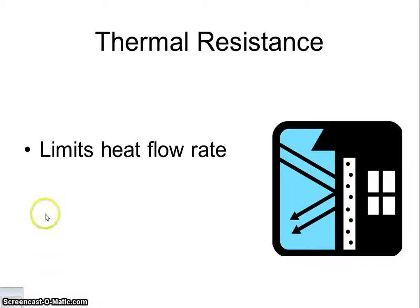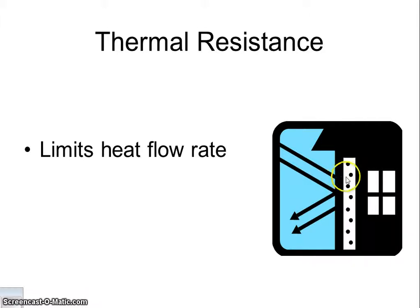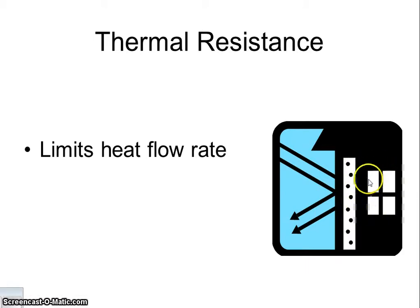The example here is a house — you see a house and it should have insulation. Here's your siding and your insulation. What happens is that between your siding and your insulation, hopefully you're keeping out all the heat. In the summertime, keep that out; in the wintertime, keep all the heat inside. So it limits heat flow — very important.